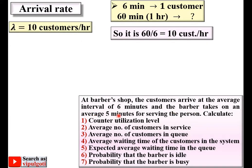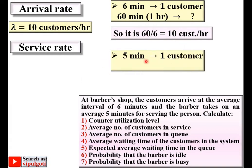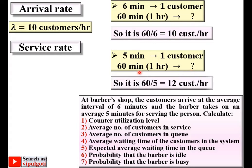The barber takes on an average 5 minutes for serving — that is the service rate. It takes 5 minutes per customer, so for 60 minutes (1 hour), we get 60 divided by 5, which equals 12 customers per hour. This is the service rate, denoted by mu (μ = 12).